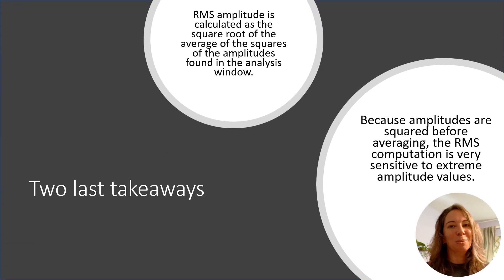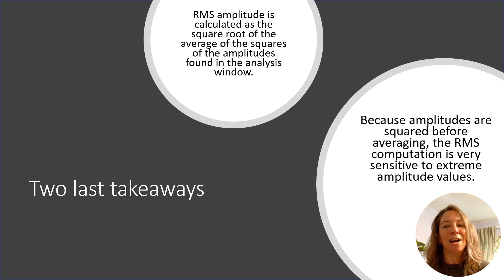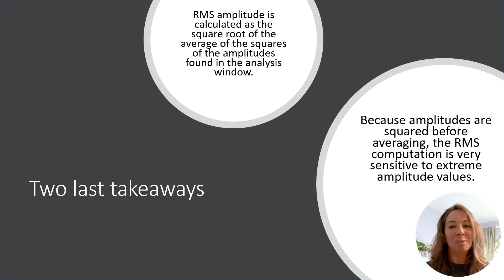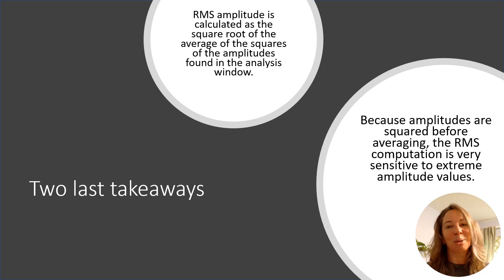Two final notes: first, remember that RMS is the square root of the average of the squares by definition, which means RMS is very sensitive to outliers because of the squaring step. Quality control is very important — make sure you check over your data first.